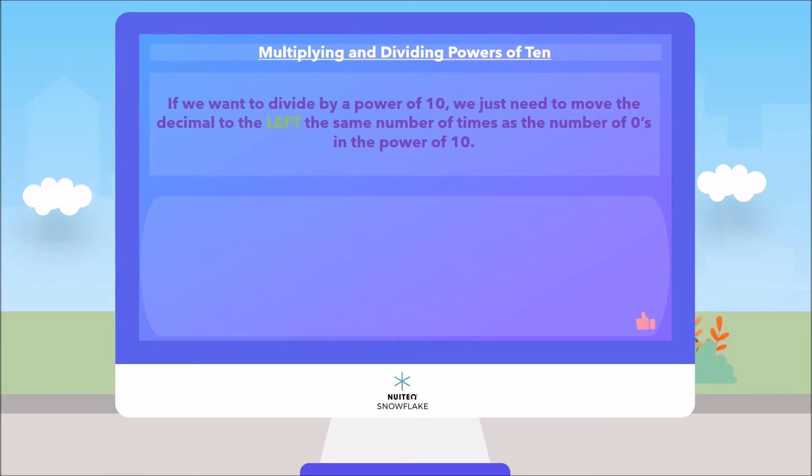And if we want to divide by a power of 10, we just need to move the decimal to the left the same number of times as the number of zeros in the power of 10. A good example could be 5420.0 divided by 100. This equals 54.2. The decimal moved two spaces to the left. Easy, right?